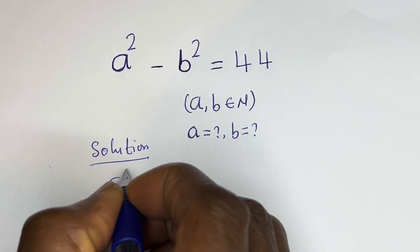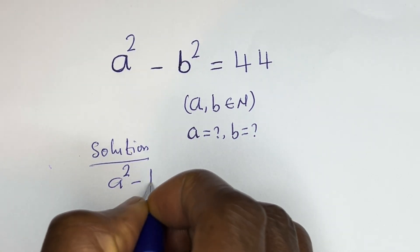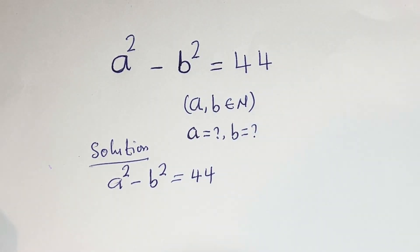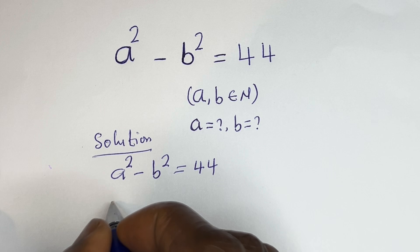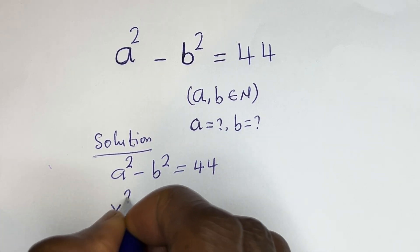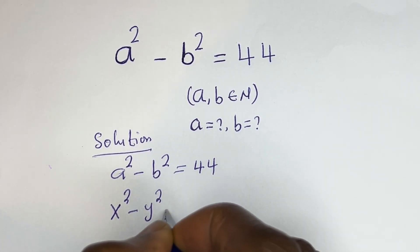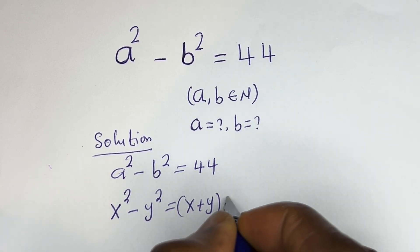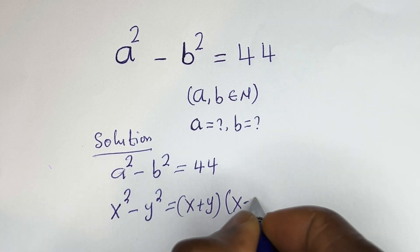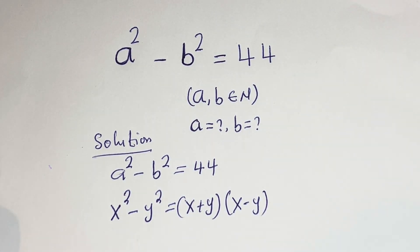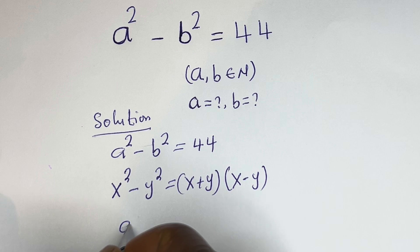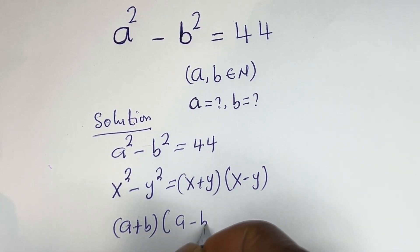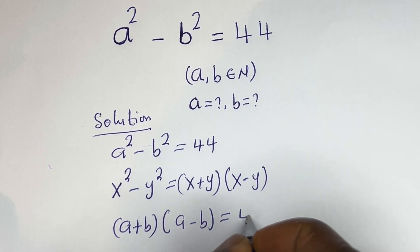We have a squared minus b squared is equal to 44. Now this is in the form of a perfect square difference. If you have a squared minus y squared, this is equal to (a + y)(a - y). Then this can be written as (a + b)(a - b) is equal to 44.